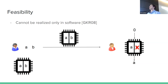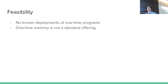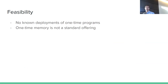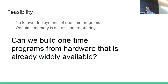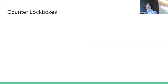Despite knowing how to build one-time programs this way, we don't see them deployed in practice. One-time memories are non-standard — no cloud providers offer access to them, and building smart cards implementing this would require development investment. In short, one-time memories don't actually exist in the world. This leads to our paper's main question: can we build one-time programs from hardware that is already widely available — hardware consumers have access to right now?